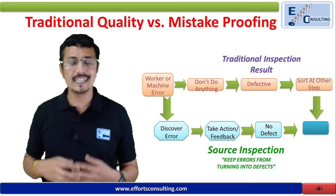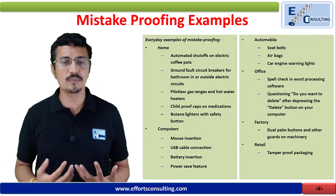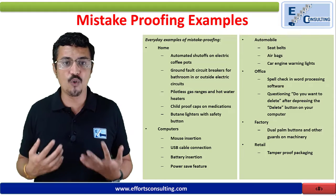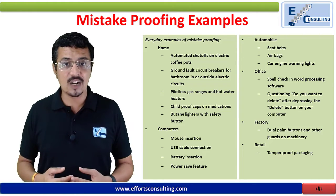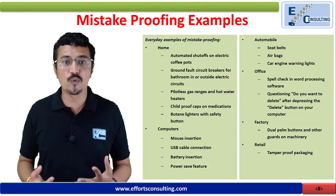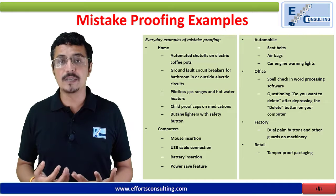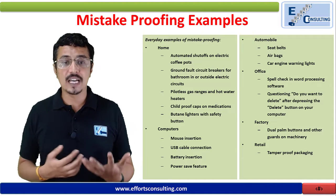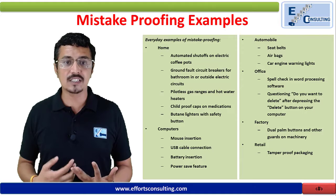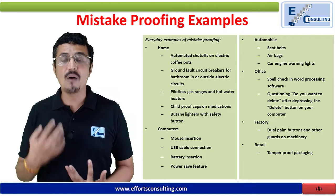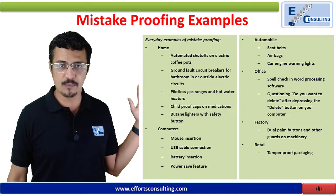What are some examples of mistake proofing? In our homes: automated shutoffs on electric coffee pots, ground fault circuit breakers, pilot gauges on ranges and hot water heaters, child-proof caps on medications, lighters with safety buttons. In computers: mouse insertion, USB cable connections, battery insertion, and power saver features — all are examples of home mistake proofing.